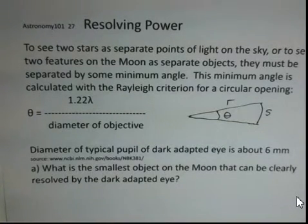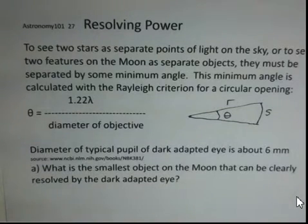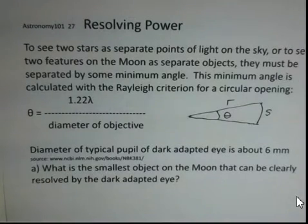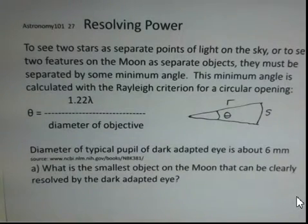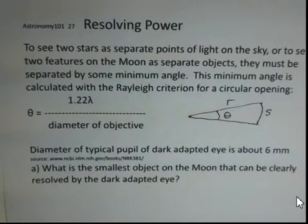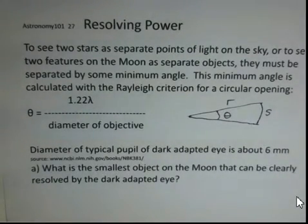This video will do a calculation for resolving power for a circular opening. One calculation will involve an eye without any optical aid, and the other calculation, a 4-inch telescope. We're going to look at the moon with our eye and with the telescope, and we're interested in how big are the objects on the moon that we see — or how far apart would two objects have to be to see two distinct objects.